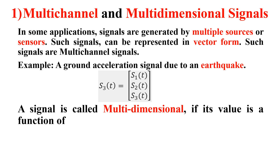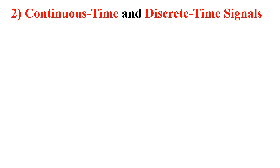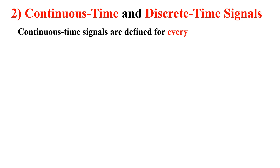A signal is called multi-dimensional if its value is a function of m independent variables. Multi-dimensional means the signal depends on more than one independent variable. An example of a multi-dimensional signal is an image.